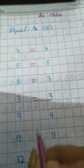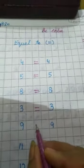5, 5. 8, 8. Equal sign, both the same na? 3, 3. 9, 9. Both the same, both the numbers are same, it means equal to sign.